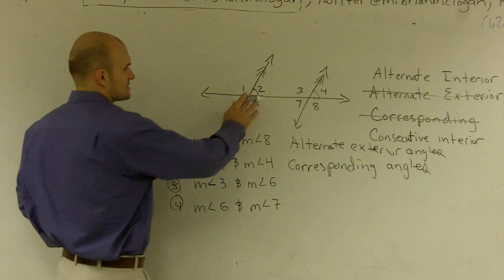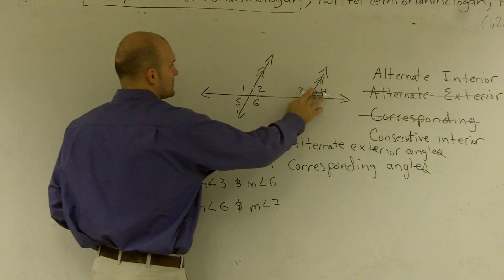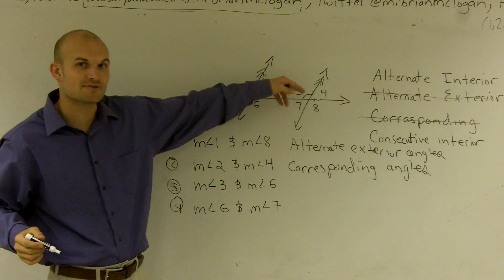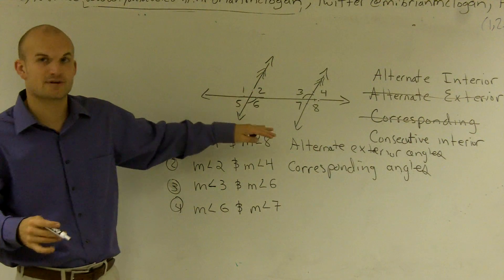For number three and six. All right? Now number three and six you'll notice, again, these are what we kind of get back to that alternating. One is above the transversal and another one is below the transversal.